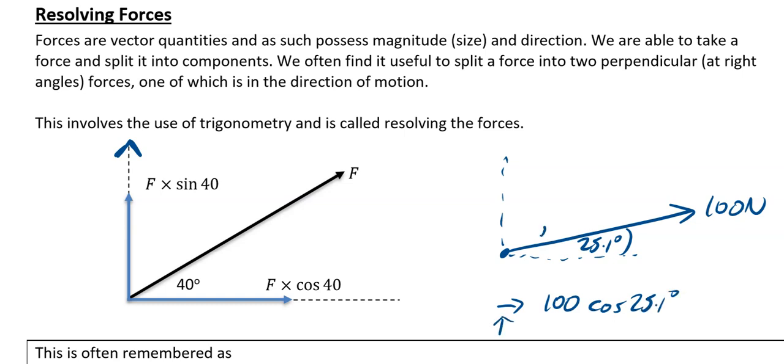And going vertically, you clearly don't have the angle here. If you don't have the angle, use sin. So going vertically, it would be 100 sin 25.1 degrees. You can see why it's definitely easier to use if you've got the angle, use cos.